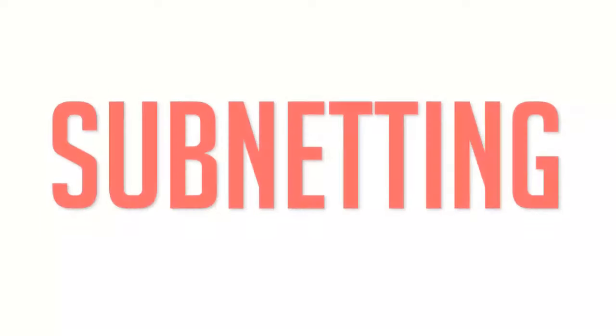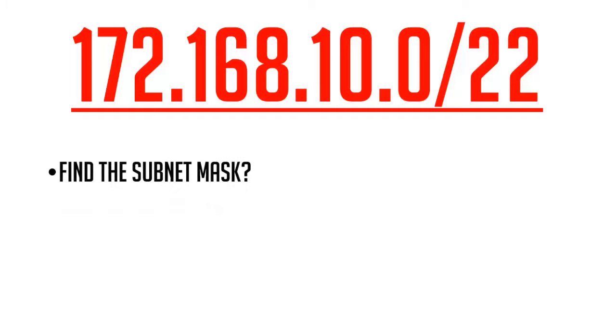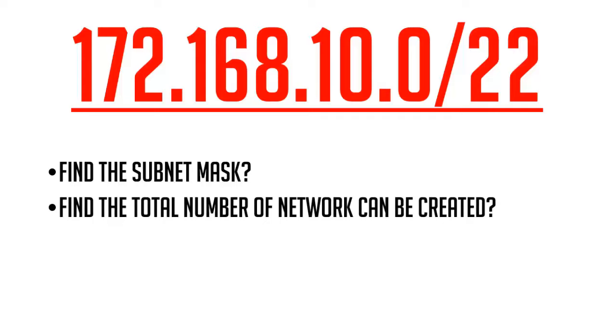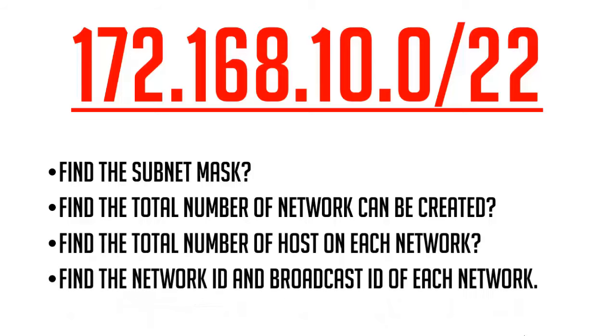In today's video we are going to discuss subnetting on a Class B IP address. From the IP address 172.168.10.0 with the CIDR value 22, we will learn how to find the subnet mask, how to find the total number of networks that can be created, how to find the total number of hosts on each network, and how to find the network ID and the broadcast ID of all the networks.